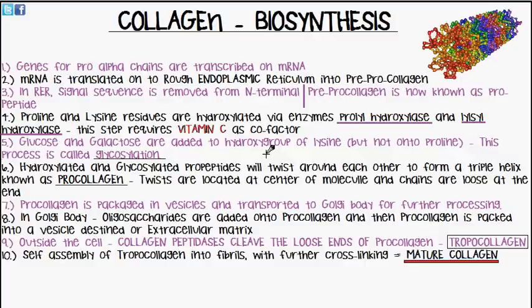Outside of the cell, there are certain enzymes known as collagen peptidases. The loose ends we discussed — the parts not twisted in the centre — are cleaved off by these collagen peptidase enzymes, forming something known as tropocollagen. Tropocollagen then assembles itself into long fibres through self-assembly and cross-links with other tropocollagens, eventually forming the mature collagen molecule.